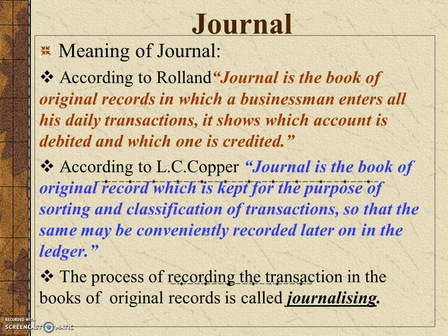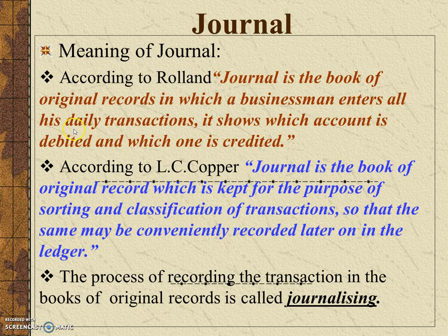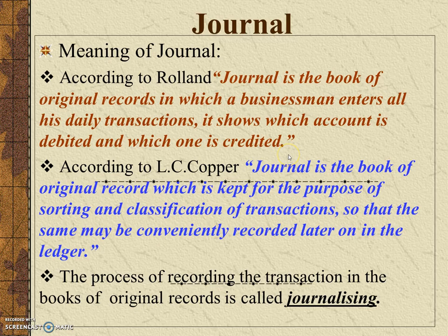These transactions are recorded in the journal. The journal is the book of original records in which a businessman enters all his daily transactions. It shows which account is debited and which one is credited. Basically, the journal is the primary book of account where the business person records transactions for the very first time.